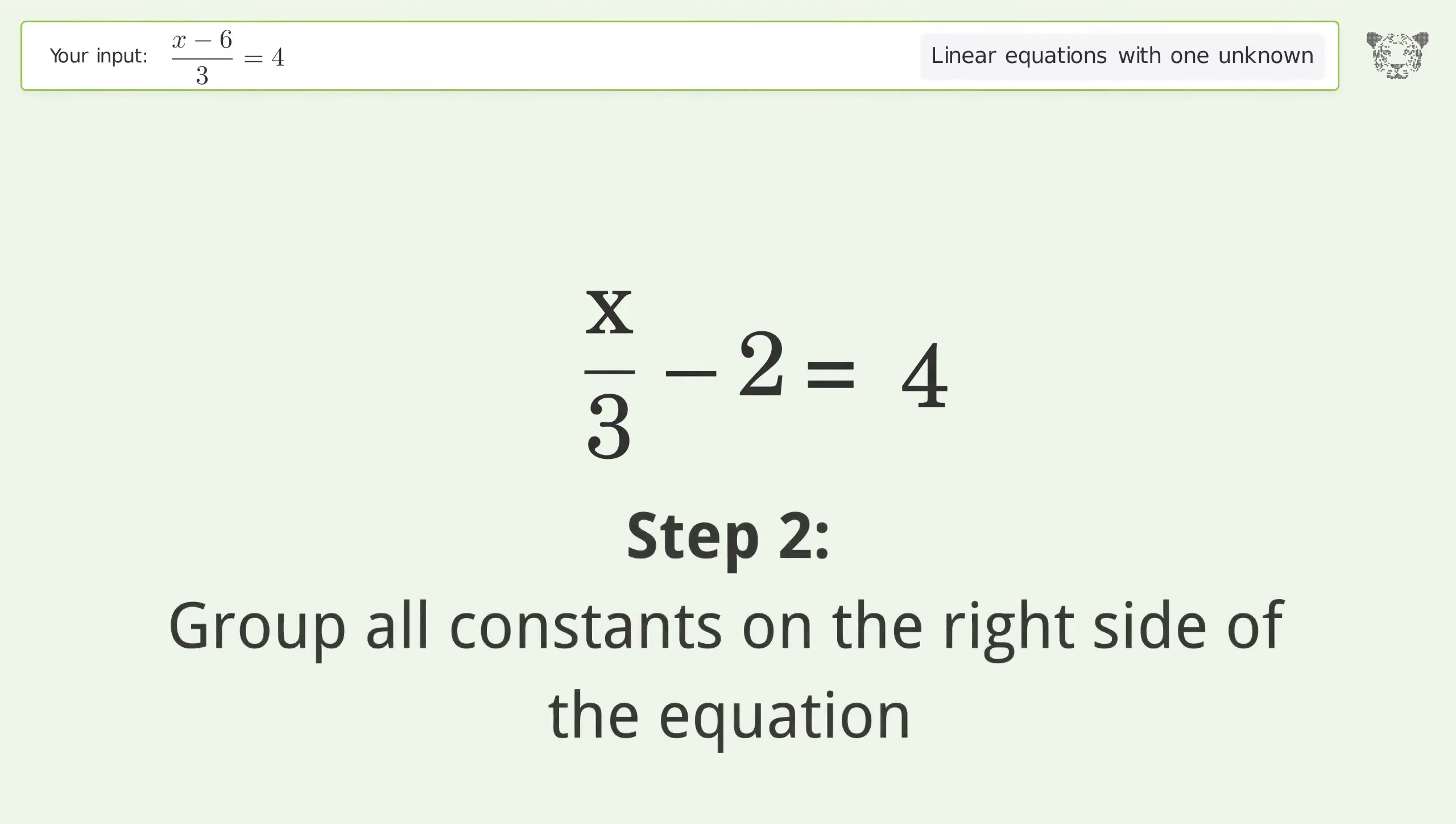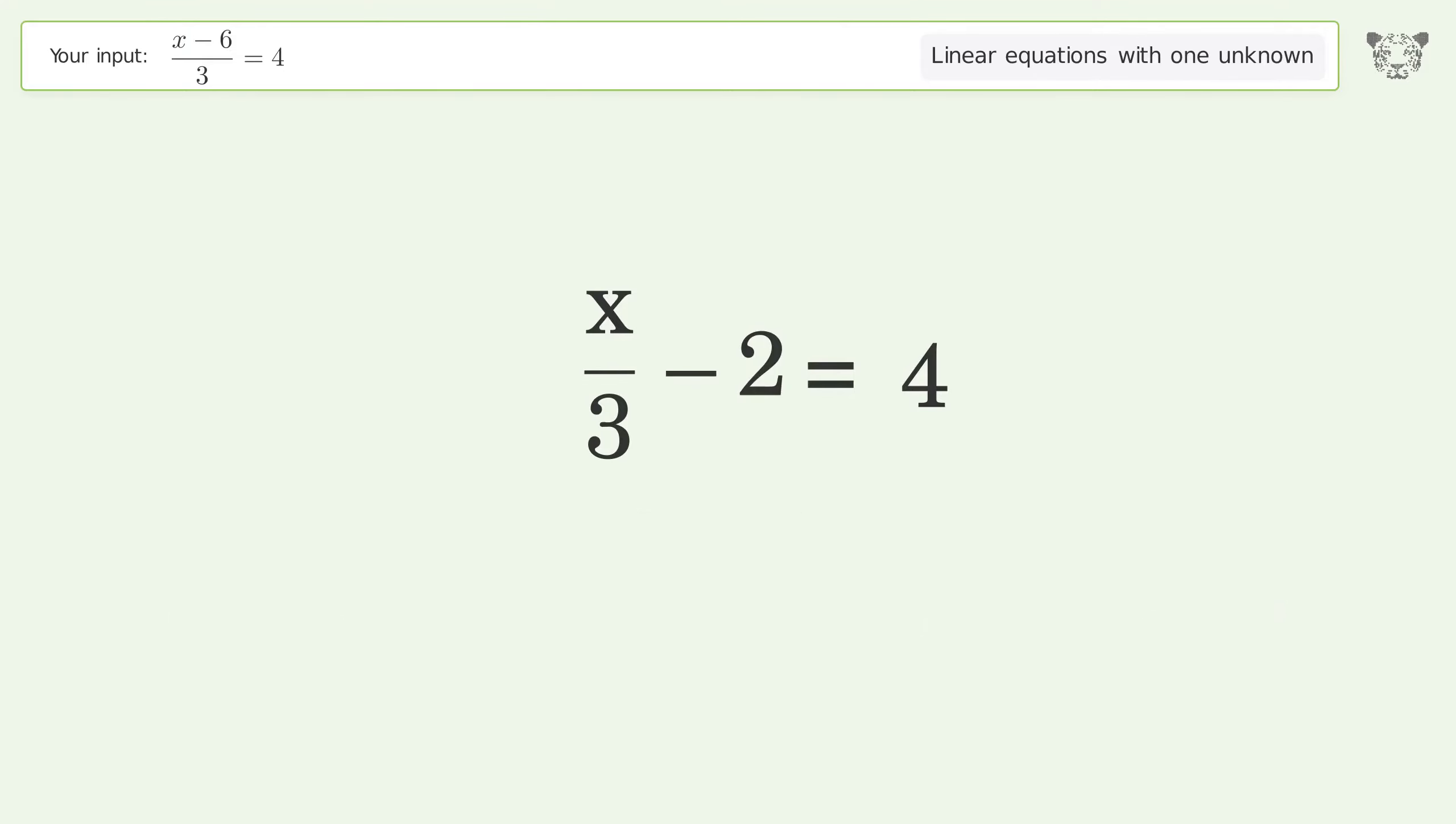Group all constants on the right side of the equation. Add 2 to both sides. Simplify the arithmetic.